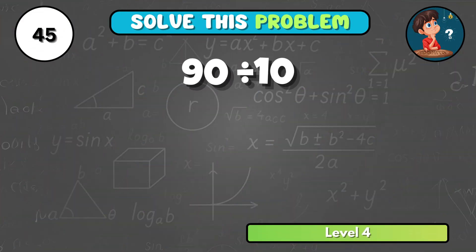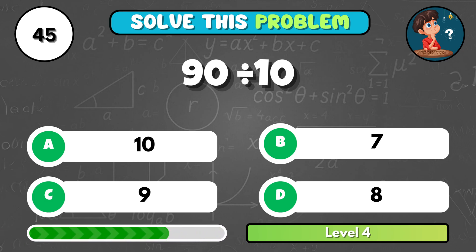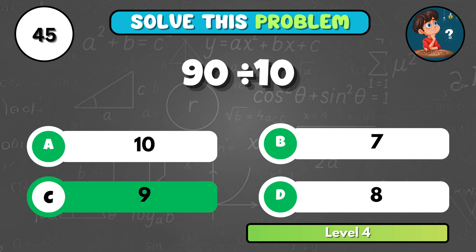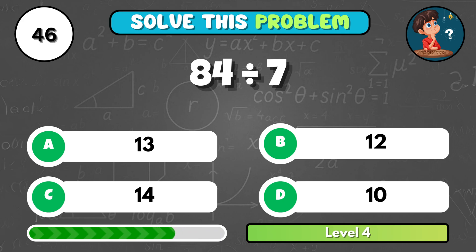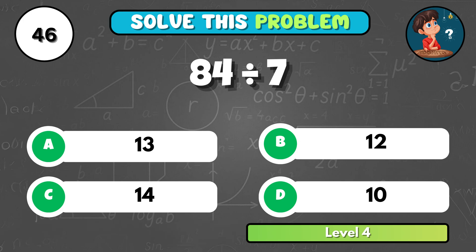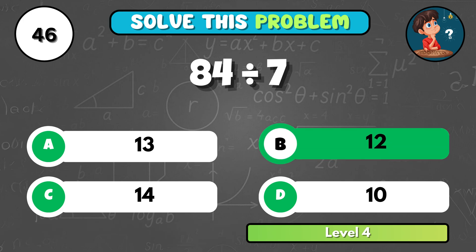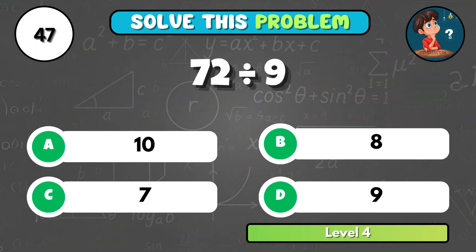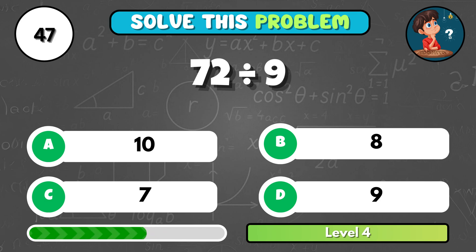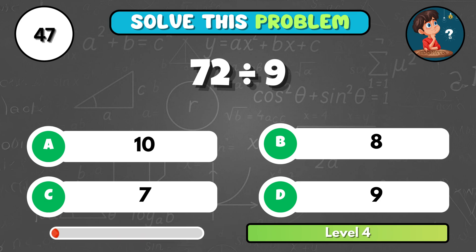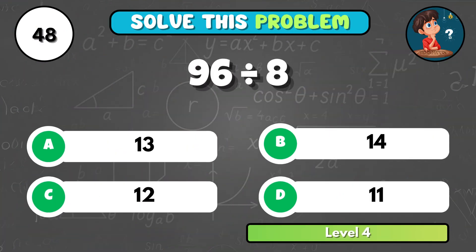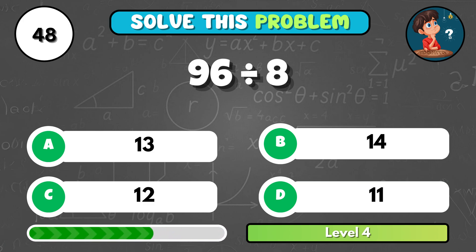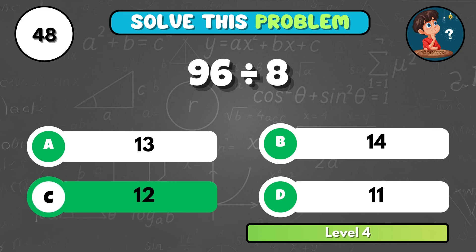Almost there — ninety divided by ten equals what? It comes to C, nine. Ready for a tricky one: eighty-four divided by seven gives you what? That's B, twelve. What's seventy-two divided by nine? It equals B, eight. Let's test your skills: ninety-six divided by eight equals what? That's C, twelve.